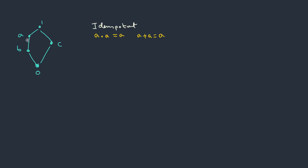Suppose if we choose two elements A and C, and perform the operation A meet C, the result is 0. What about C meet A? It's again 0. It doesn't really matter whether you perform the operation A to C or C to A — both give the same result. Therefore, it follows the property of commutativity.